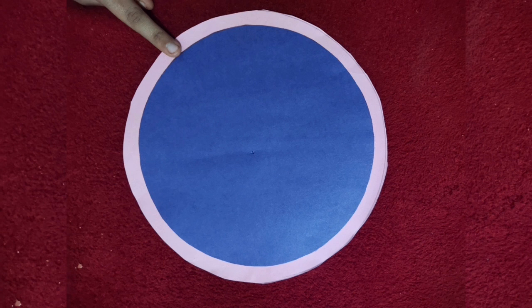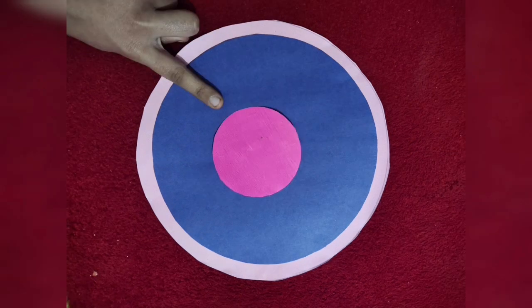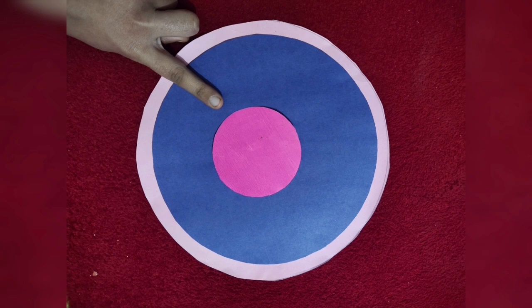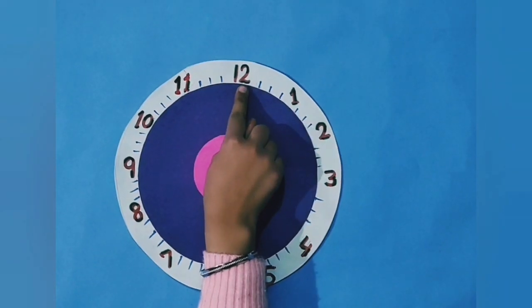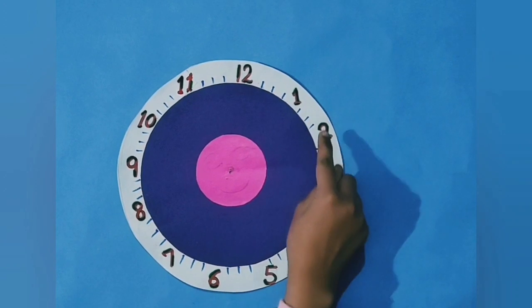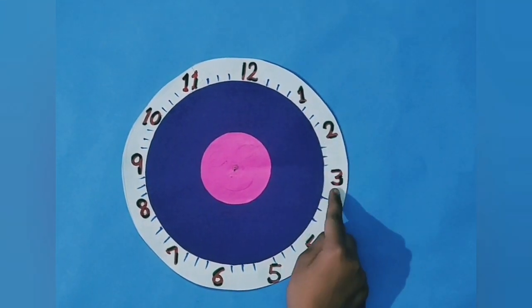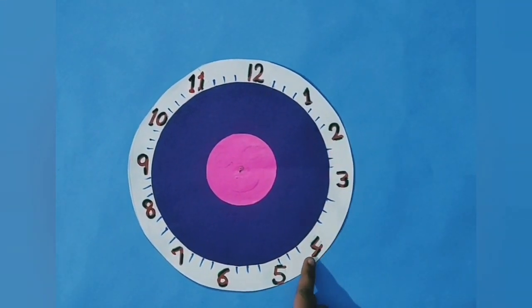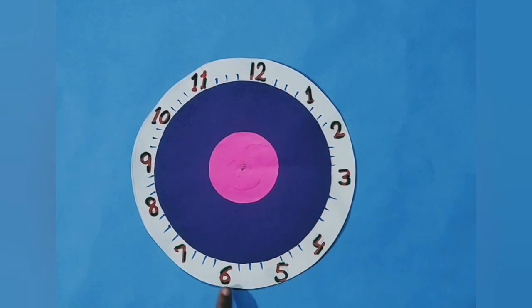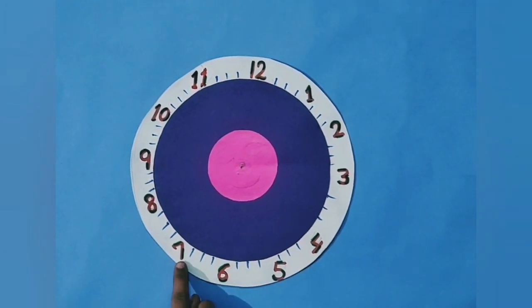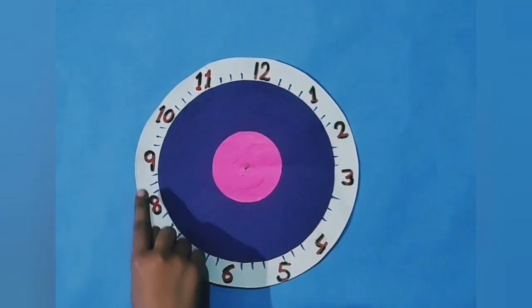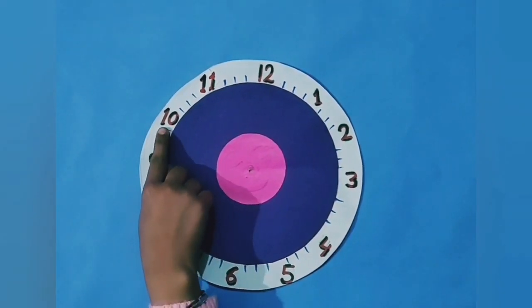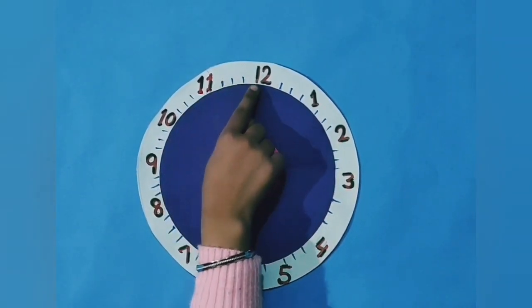Dear students, come let's learn to make a clock from it. On the face of a clock, at equal distance, numbers are written from one to twelve. Students, each part between two numbers is divided into five equal parts. Now come, let's see the important parts of a clock.